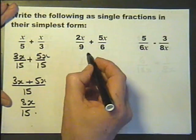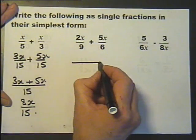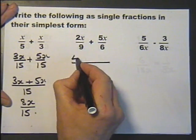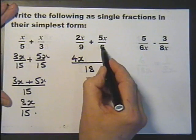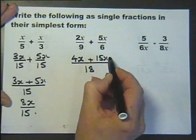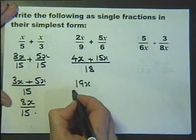Nothing cancels. Lowest common denominator is 18. So, 9 has been doubled, so I must double the 2x. The 6 has been trebled, so I must treble the 5x. And the answer is 19x over 18.